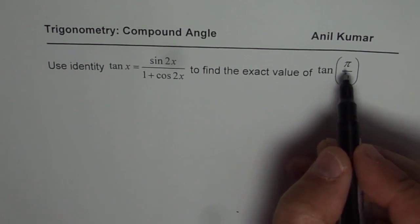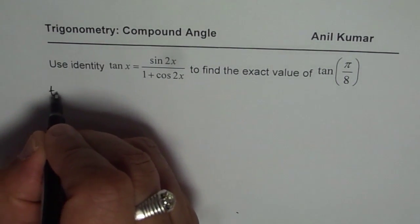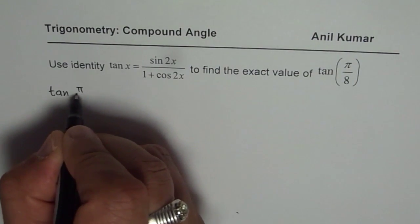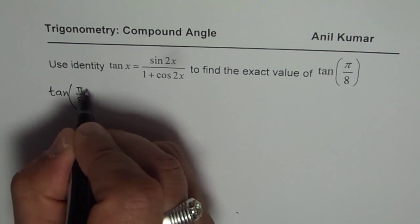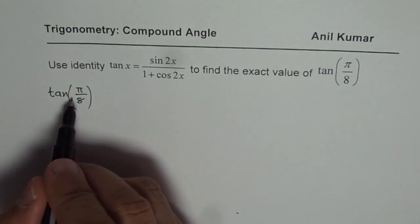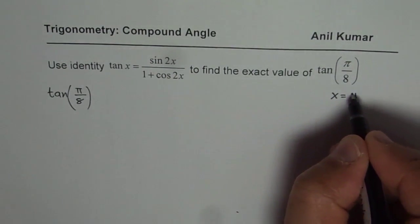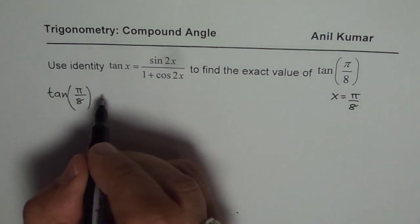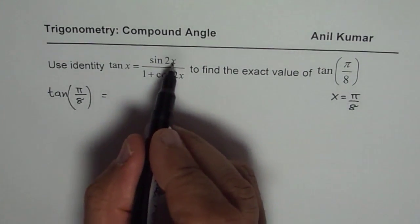So, we need to find tan pi by 8. Let's write down the formula, tan pi by 8. We know tan x is sin 2x. In this case, x is pi by 8. So we have x as pi by 8 in our formula. Let's substitute pi by 8 for x.